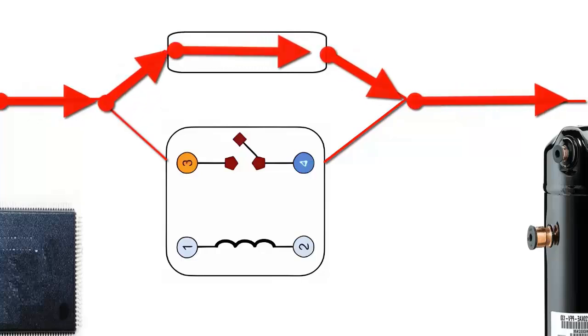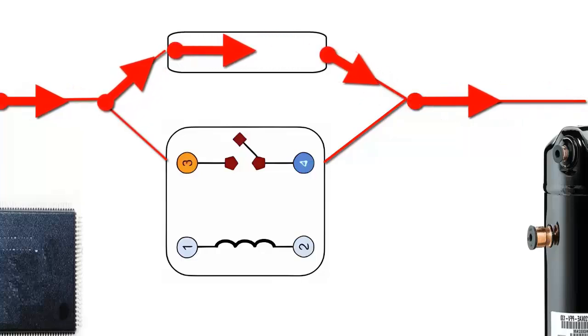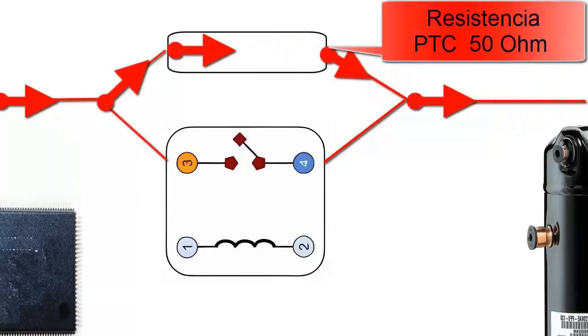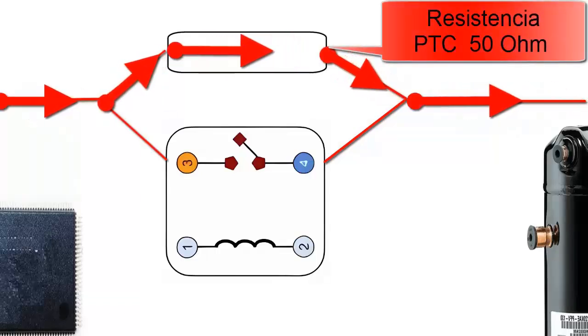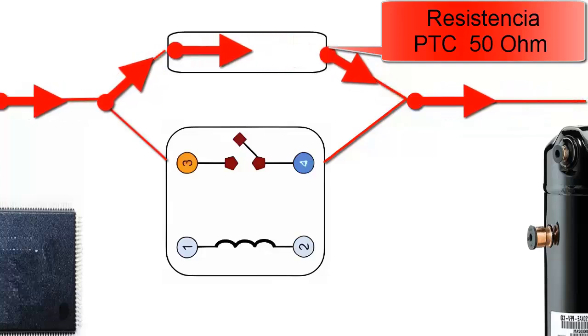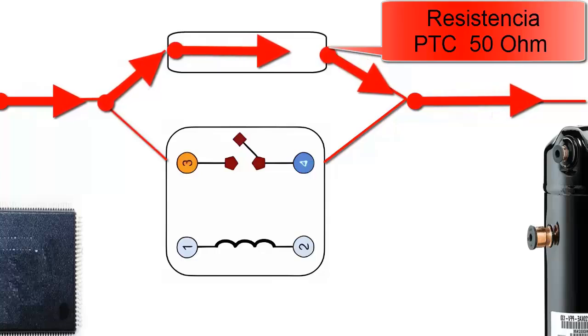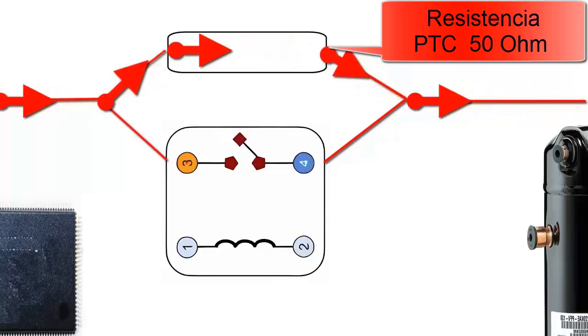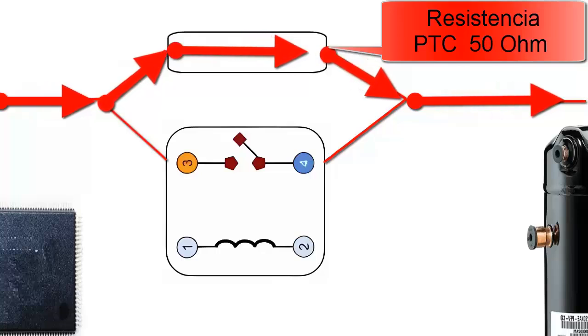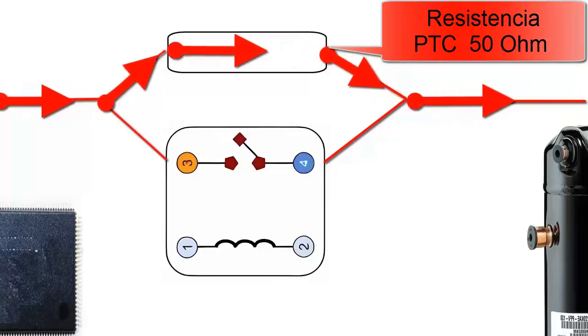As the unit starts up, this initial current flow increases the temperature of the PDC resistor to, for example, 45 degrees Celsius. Consequently, the PDC resistor now has an electrical resistance value of, for example, 50 ohms. This increase in the PDC resistor's value helps to further control the initial starting current.